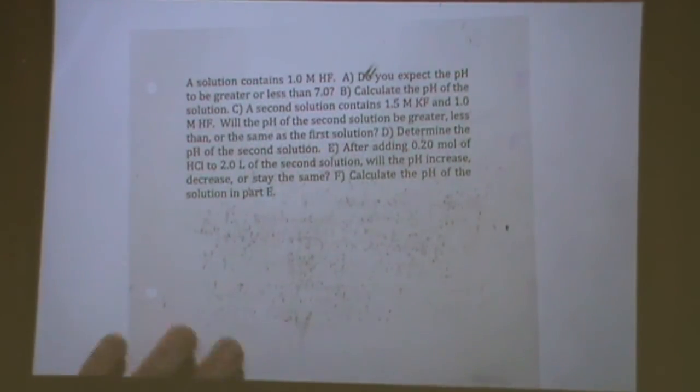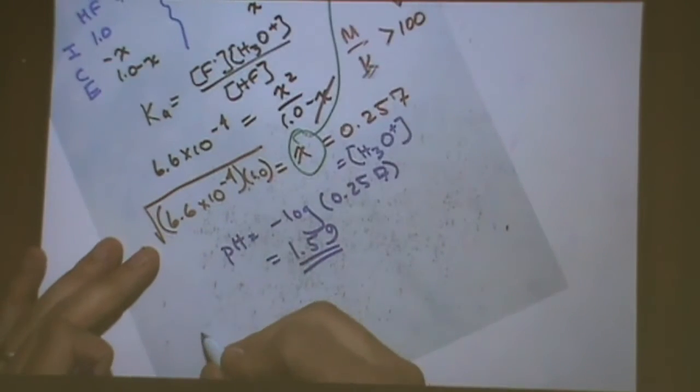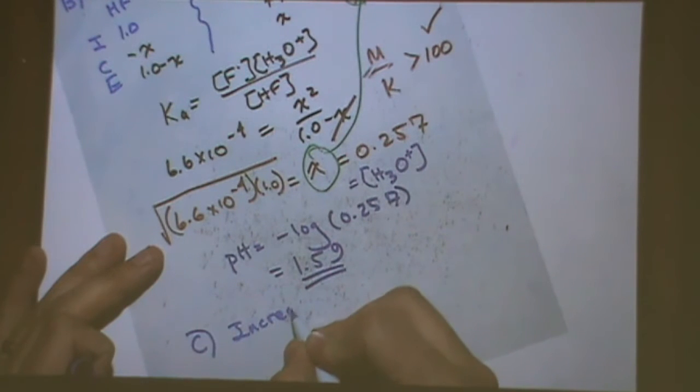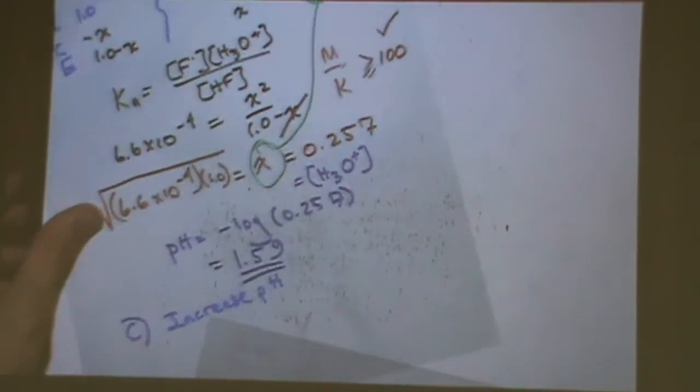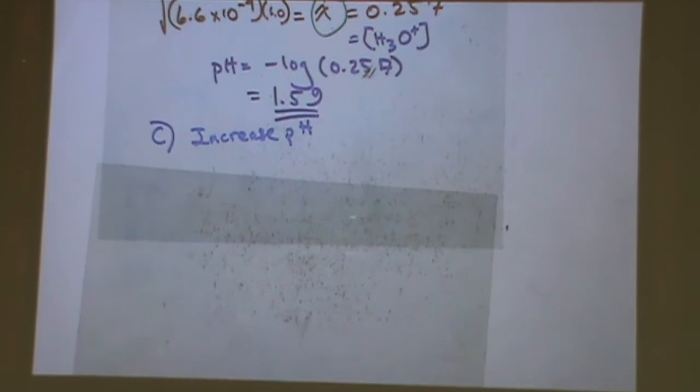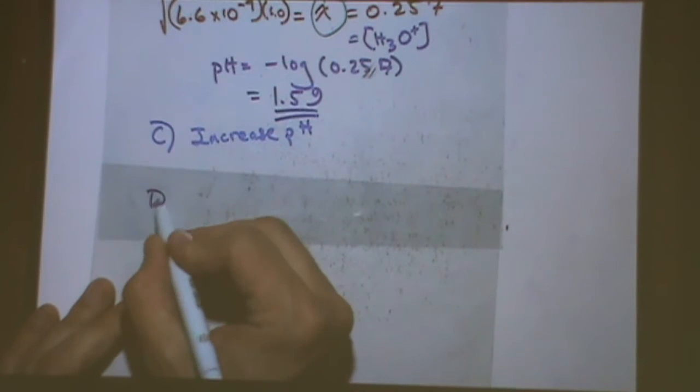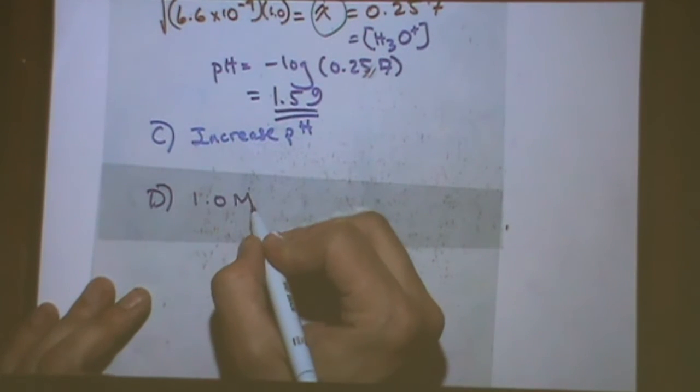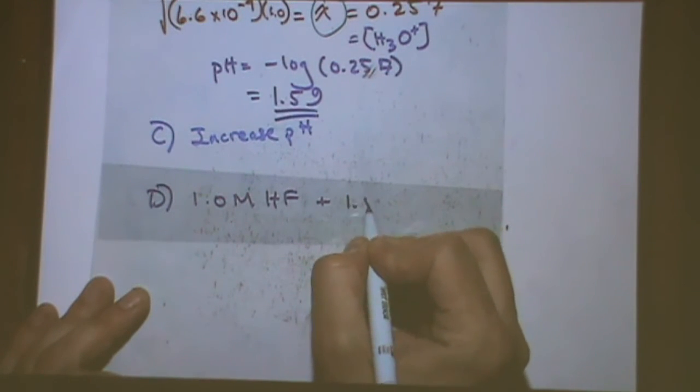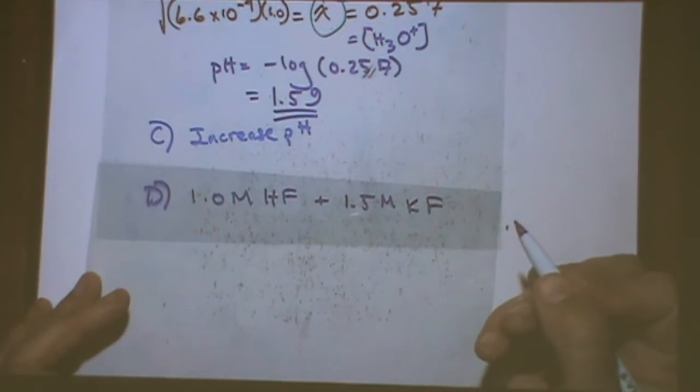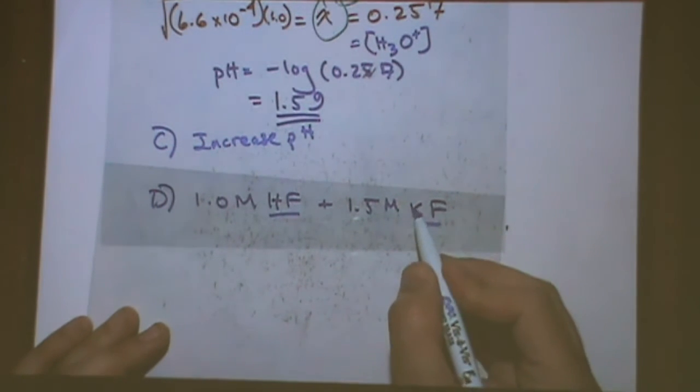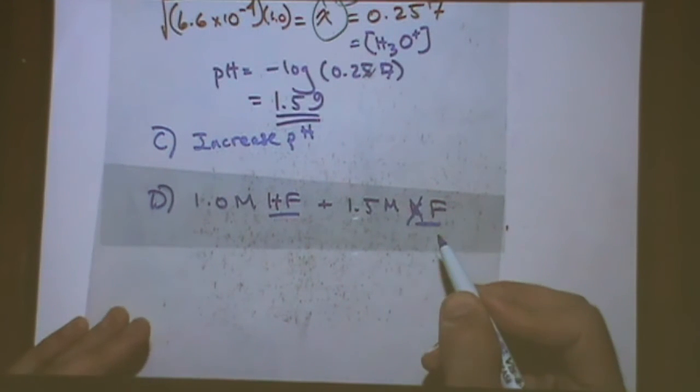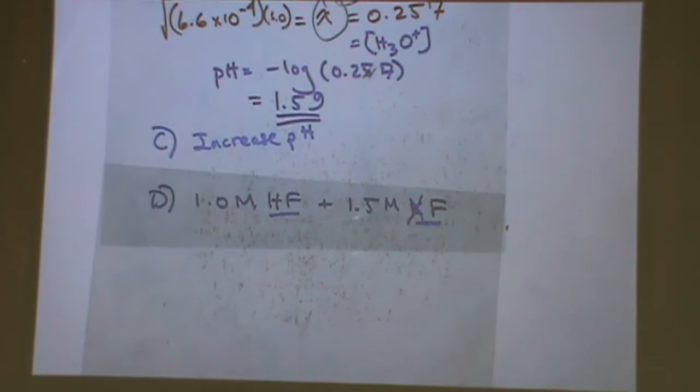Okay. So let's do part. So part C was just to be explicit here. Part C, it will increase the pH. Now let's do part D. Part D is what is the pH of that solution. So let me rewrite the numbers down for you. For part D, we have 1.0 molar HF plus we have 1.5 molar KF. Okay. So this is a common ion problem. The common ion is the F. What do I do with the K in this problem? Totally ignore it because it's a spectator ion. Or in other words, it's neutral.